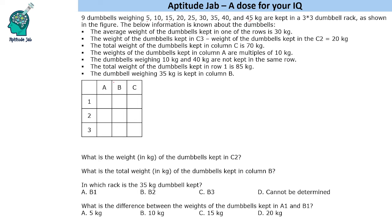So it has 3 columns A, B, C and 3 rows 1, 2, 3. This information is given: The average weight of the dumbbells kept in one of the rows is 30 kg. The weight of the dumbbells kept in C3 minus C2 is 20 kg.